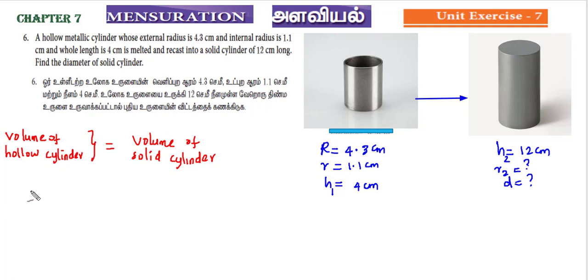The hollow cylinder volume is π(R² - r²)h cubic units. That is the solid cylinder volume, which is πr²h cubic units.